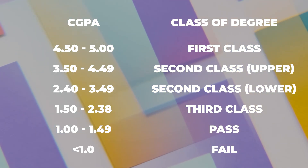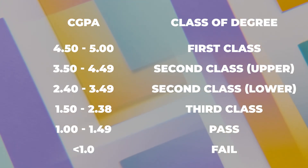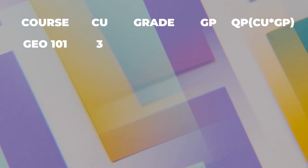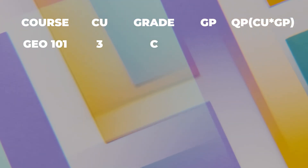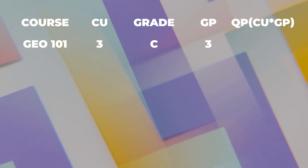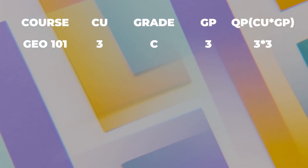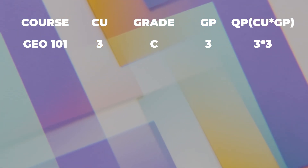How do we calculate CGPA? We will first start by calculating the GPA. Let's take the example of Adamun Chijoke Mustapha, a 100 level student in the BSc Geography program. His first semester result goes thus: GEO 101, a 3 credit unit course, is graded C with a grade point of 3. So the quality point will be grade point times credit unit, which is 3 times 3, giving you 9.